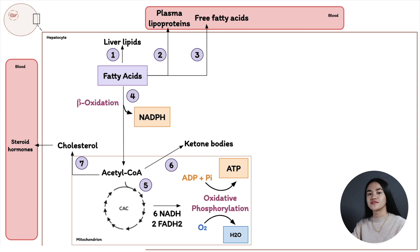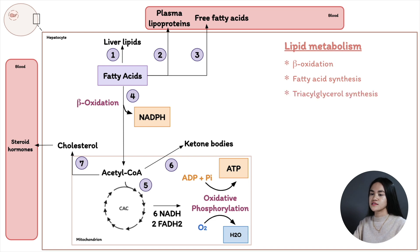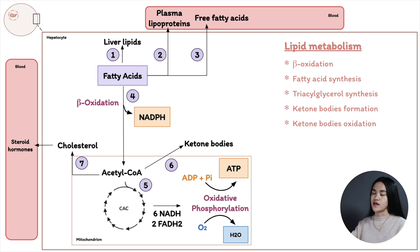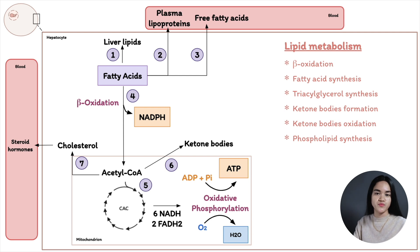To summarize lipid metabolism: fatty acids can undergo beta-oxidation yielding acetyl-CoA; fatty acid synthesis — acetyl-CoA back to fatty acids; triacylglycerol synthesis; ketone body formation and oxidation when glucose is not available; and phospholipid synthesis. The liver plays a significant role in processing and distributing nutrients for itself and other extra-hepatic tissues and organs, and is metabolically flexible, adapting to the organism's metabolic needs.